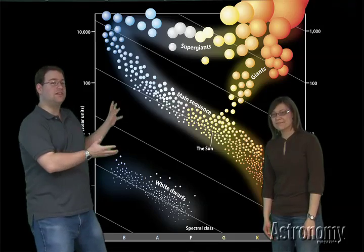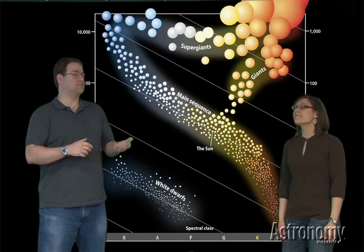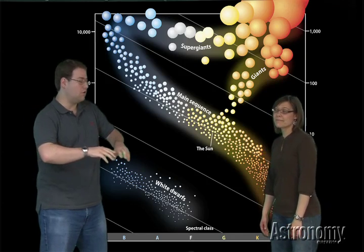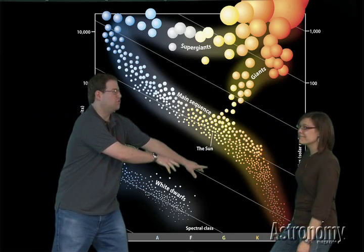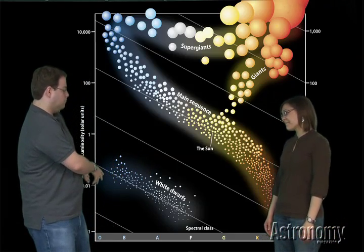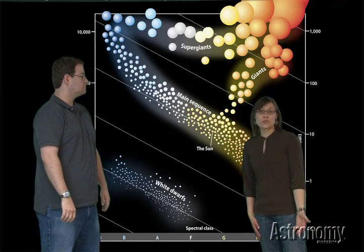Scientists group all of this information into the diagram we showed you earlier. This is the Hertzsprung-Russell diagram, or HR diagram. Now that we understand temperature and color, you can see the same idea expressed here. Red stars, those are type M, are the coolest, and O stars, the blue ones, are the hottest.